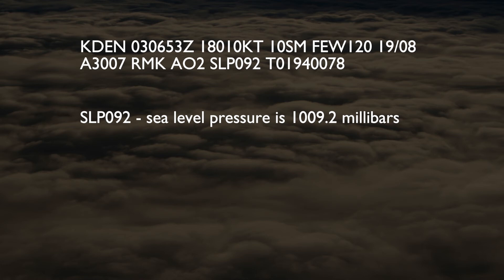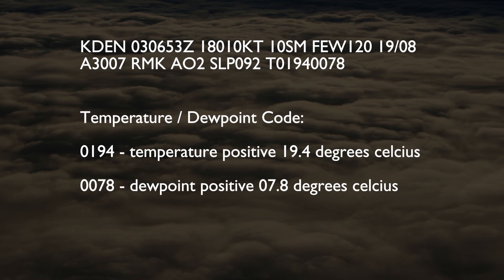The numbers that follow are a more precise temperature and dew point report commonly added in the remarks section of METARs. The T stands for temperature, followed by four numbers indicating temperature and four numbers indicating dew point. The first of the four numbers will be a 0 if the temperature or dew point is positive, and a 1 if it is negative. The next three digits state the temperature or dew point to the tenth of a degree. In this example, the Denver METAR lists the temperature as 19 degrees with a dew point of 8, and the remarks contain the additional information that the temperature is positive 19.4 degrees with a dew point of 7.8 degrees.